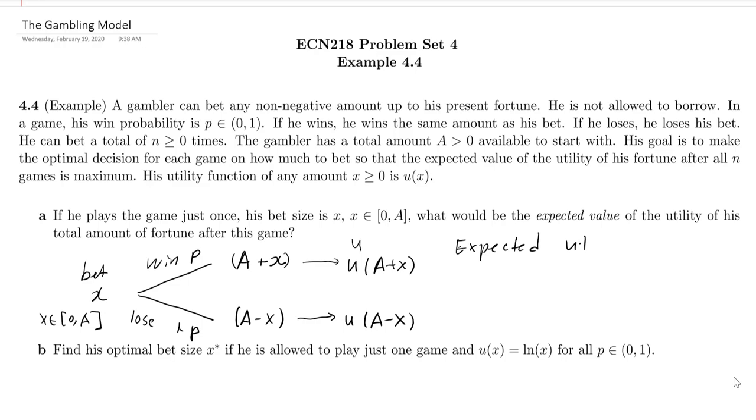So the expected utility, expected value of the utility, is simply utility multiplied by its probability. And usually it's easier if we put the P in the front, because that way we don't get confused for the second term. We know 1 minus P is just a coefficient.